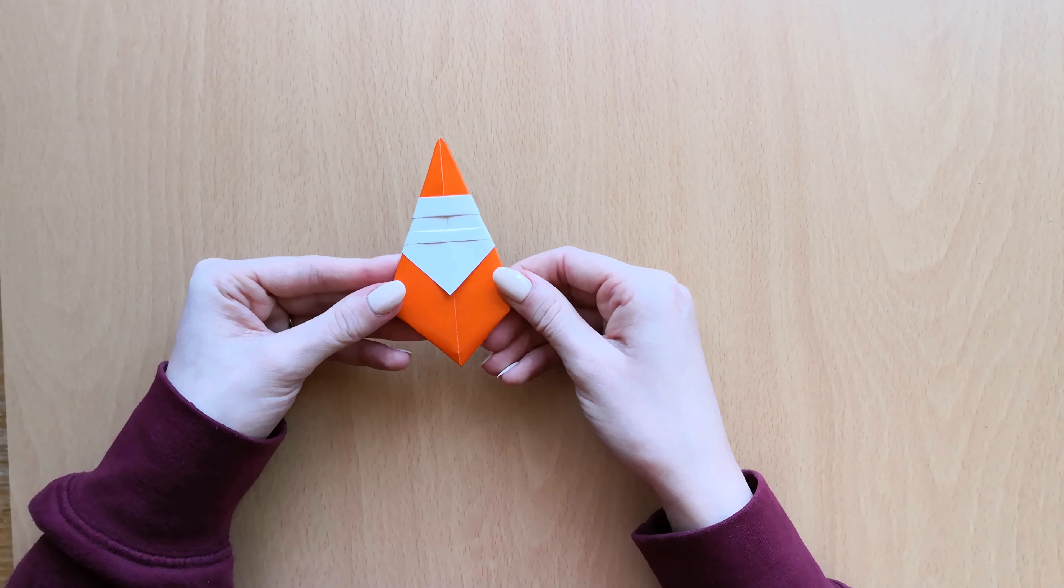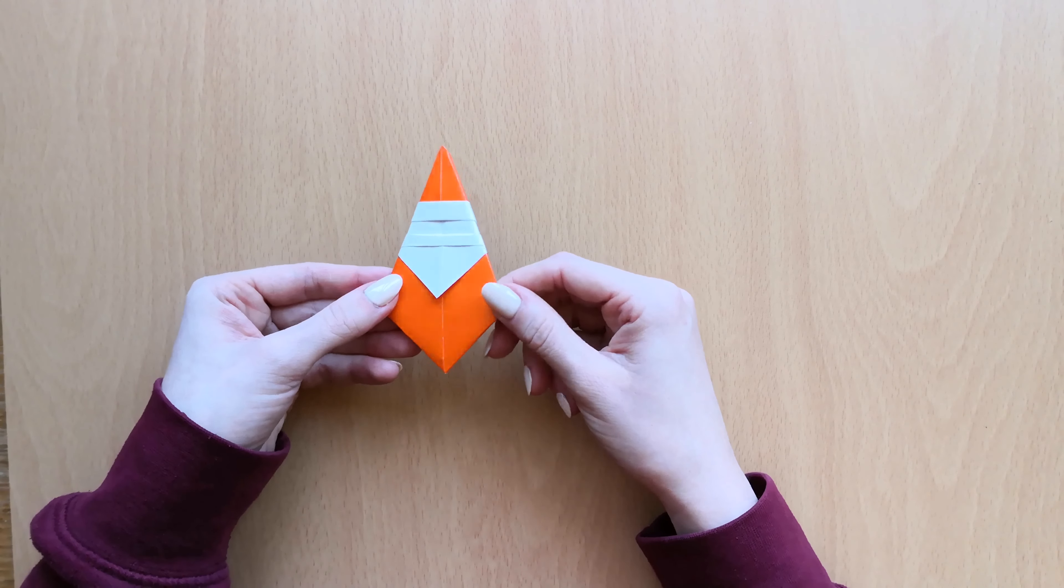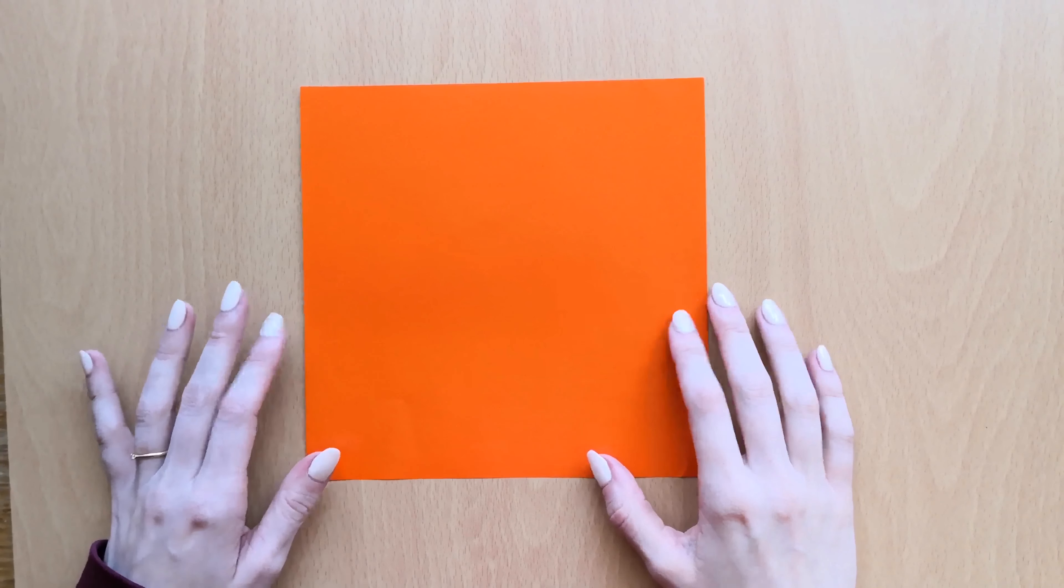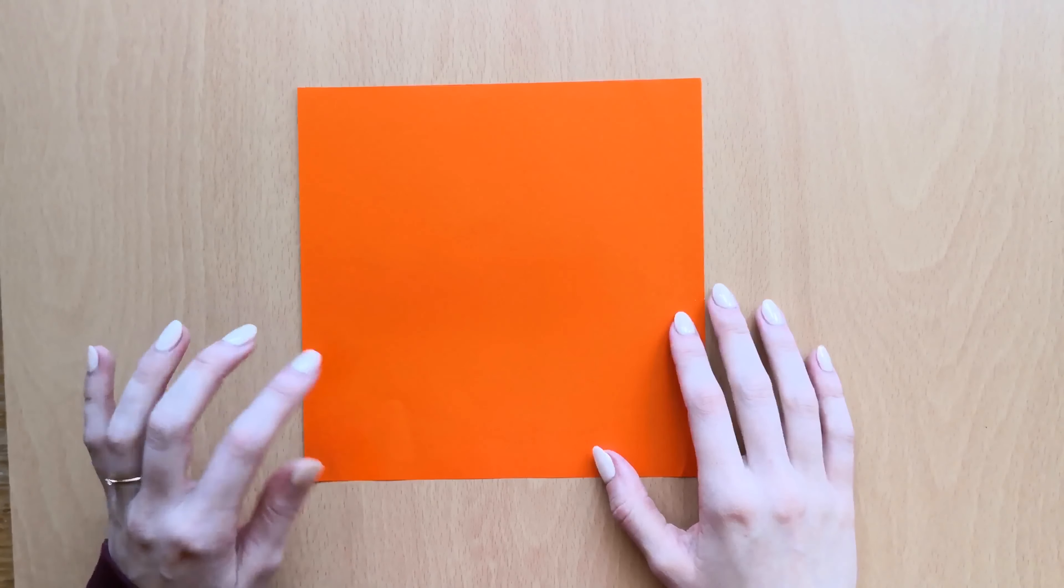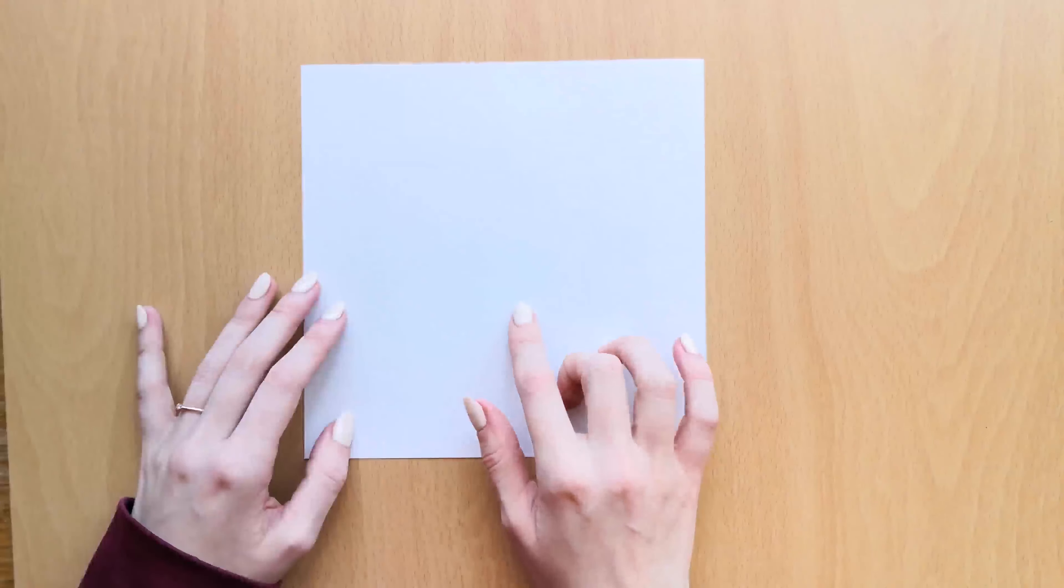Welcome back to origami videos. Today I'm going to show you how to make this paper Santa. All you're going to need is a square piece of paper that has color on one side and it's white or has a different color on the other side.